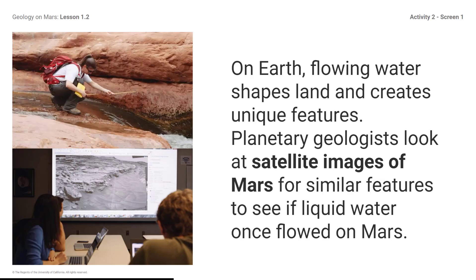On Earth, flowing water shapes land and creates unique features. Planetary geologists look at satellite images of Mars for similar features to see if liquid water once flowed on Mars. We'll be examining images of Mars to look for evidence of past liquid water.